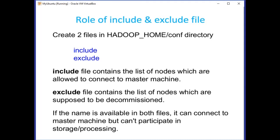The include file contains the list of nodes allowed to connect to the master machine, while the exclude file contains the list of nodes to be decommissioned. Commissioning means adding a new machine to the cluster, and decommissioning means removing a machine from a running Hadoop cluster. You might think that if a name appears in both files, that's a contradiction — one file includes it, the other says it should be removed shortly.